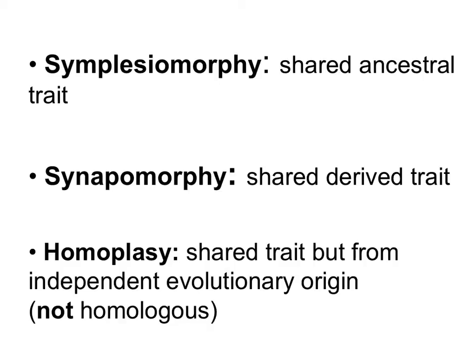There are three types of traits that we can see in a phylogeny. The first one is symplesiomorphy. This is a trait that is ancestral, that we inherit from a common ancestor, but it's not unique to a particular group.